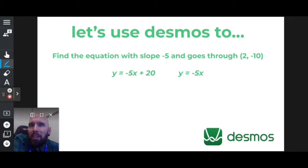What's up? Let's use Desmos to find which equation has a slope of negative 5 and also goes through (2, -10). I wonder what it is.